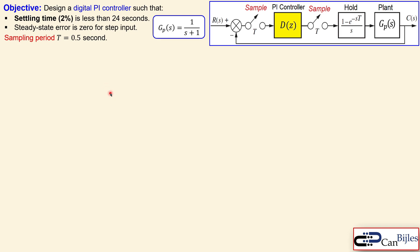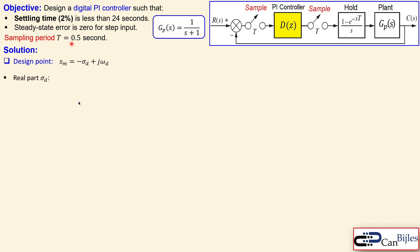Let's look at our solutions. The first step is the design point. We are given that the settling time must be less than 24 seconds, so we take it as exactly 24 seconds. The design point is in general given in the Laplace domain as minus sigma_d plus j*omega_d. For the real part we use the settling time criterion: the two percent settling time is given by four over sigma_d. So sigma_d equals four over the settling time, which is four over 24, or one over six.